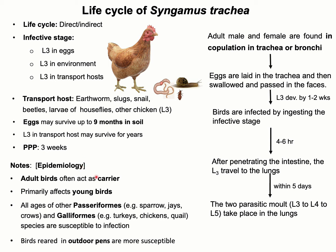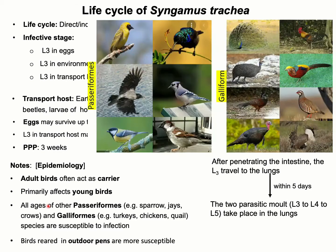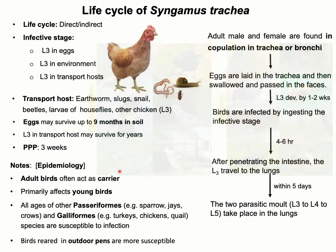Before moving on to the life cycle, some important epidemiological factors related to this parasitic infection in domestic and wild birds: this parasite primarily affects young birds, while adults act as carriers. Birds of the orders Passeriformes and Galliformes of all ages are susceptible, and birds reared in outdoor pens are also highly susceptible.